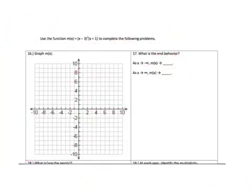In this video we're going to analyze a polynomial function. Looking at our function m(x), the first thing we can find are zeros. The way we find our zeros is we take each of our factors and set them equal to zero. So we will have (x - 3)² = 0 and x + 1 = 0.